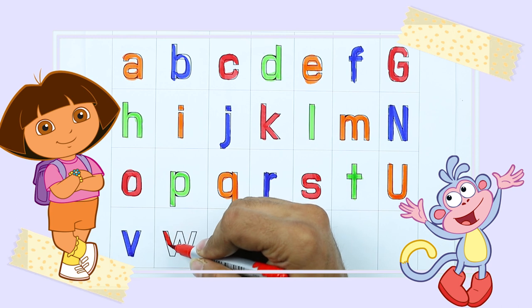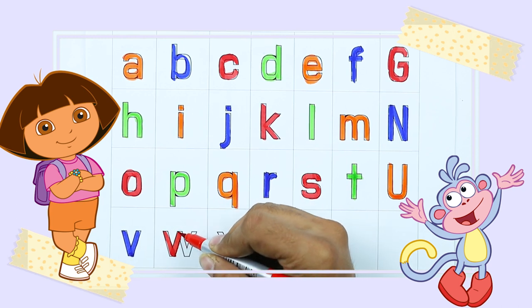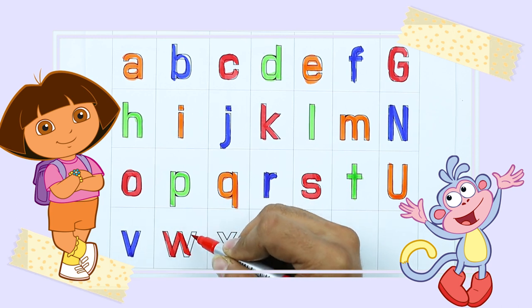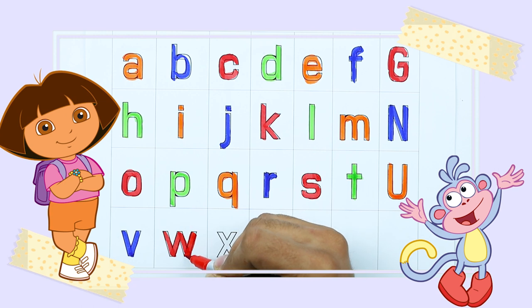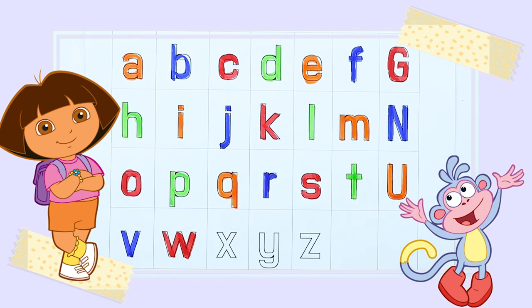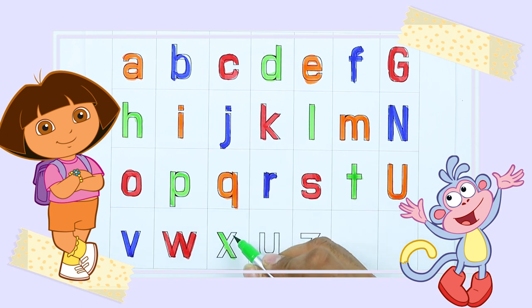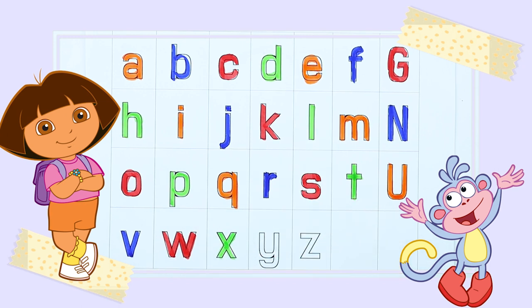W. Capital small W with red color. W for watch. X. Small x with green color. X for xylophone.